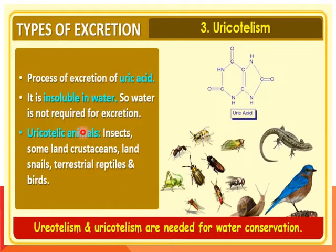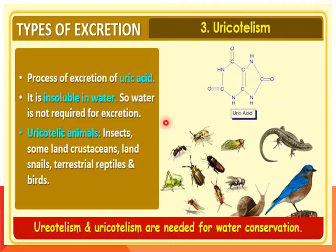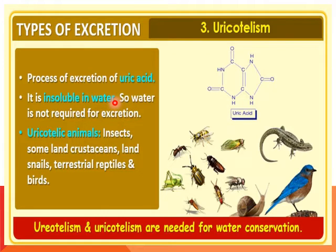If the process of excretion involves uric acid, the animals are known as uricotelic animals and the process is known as uricotelism. Examples include insects, some land animals, land snails, terrestrial reptiles, and birds. Uric acid is highly insoluble in water, so these animals do not require water for excretion.